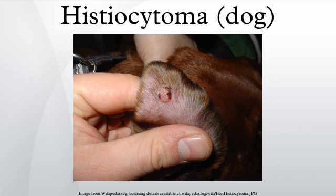A histiocyte is a differentiated tissue cell that has its origin in the bone marrow. The source for histiocytes is the monocyte macrophage line. Monocytes and macrophages are responsible for phagocytosis of foreign material in the body. Langerhans cells are dendritic cells found in the skin and function by internalizing antigens and presenting them to T-cells. They arise from monocytes. Histiocytic disorders refer to diseases that are caused by abnormal behavior of these cells.